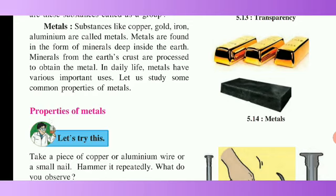Copper, gold, iron, and aluminum are all known as metals. They are found in minerals deep in the earth. The minerals from the earth's crust are processed to obtain metals. Dead and decayed organic matter in the soil contributes to this process. In our daily life, we use metals in many ways. Now we are going to learn about the common properties of metals.